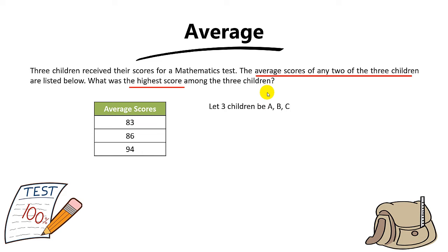All right, welcome back. Let's go through the answers and see whether you got it correct. As I mentioned earlier, let the three children be A, B, C. To find the scores of A and B, you take 83 times 2. Remember, average times the number of children is the total score. You get 166.